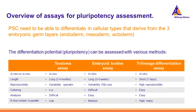Let's now move to the assessment of pluripotency. PSCs, by definition, need to be able to differentiate into cell types derived from the three embryonic germ layers: endoderm, mesoderm, and ectoderm. This property can be assessed in various ways, both in vitro and in vivo.